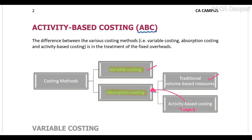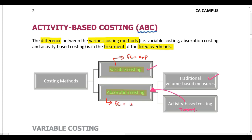It's important to understand that the difference between these various costing methods is in the treatment of our fixed overheads. With variable costing, our fixed overheads are expensed in the period incurred. On the other hand, with absorption costing, our fixed overheads are included in the value of inventory.